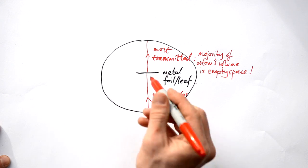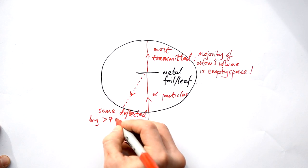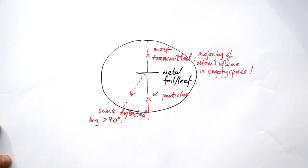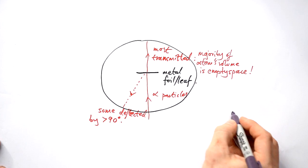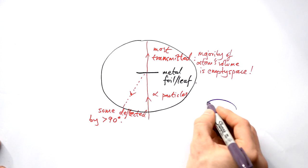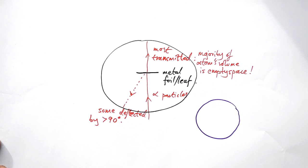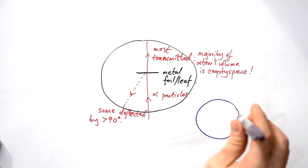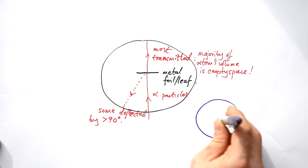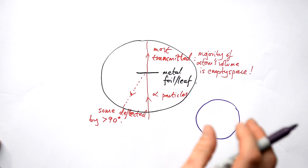He actually found that some alpha particles were being deflected by more than 90 degrees, in other words they were coming back on themselves. Rutherford calculated that if we model atoms as a circular target that the alpha particles are incident on, he calculated that if alpha particles were fired at this atom, then about one in 10,000 would be deflected.